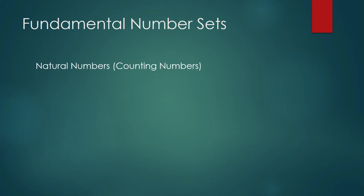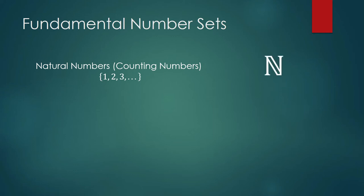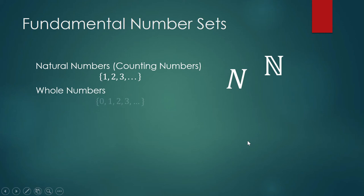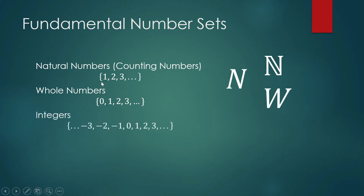The fundamental number sets include the natural numbers or counting numbers: 1, 2, 3, and so on to infinity. This is the stylistic notation for the set of natural numbers; some books prefer a different letter. Whole numbers are the counting numbers plus 0. The set of integers includes the counting numbers, 0, and the negative of the counting numbers. The symbol for integers is Z, sometimes written as double Z or double N.